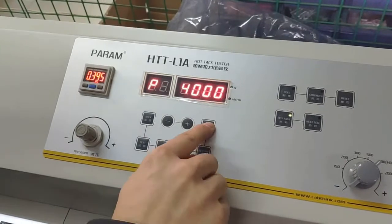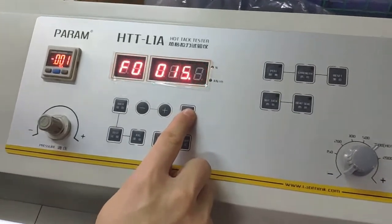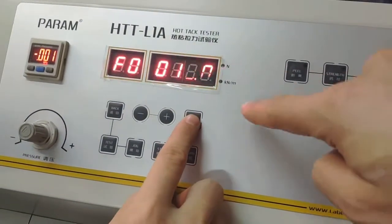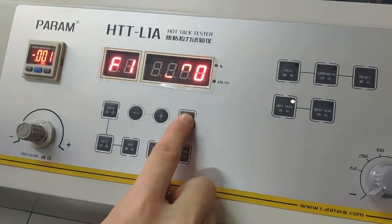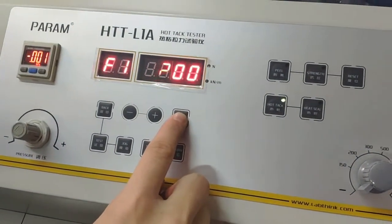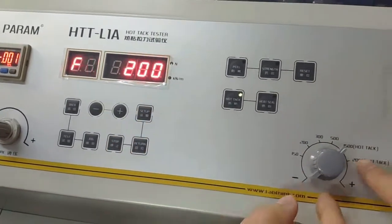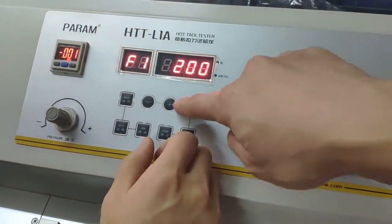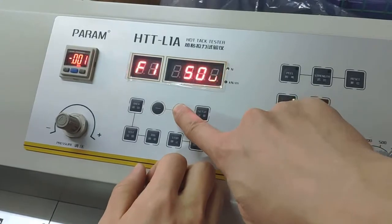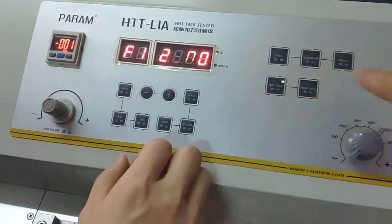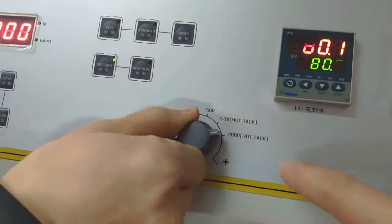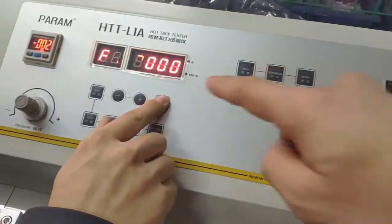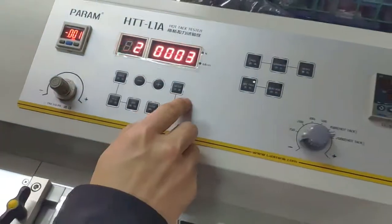After confirmed, you can go to the next one. F0 means the width of the sample, 50 millimeters. F1 means the speed. Actually if you do the hot tack, you have to adjust the speed to the right one according to the standard.